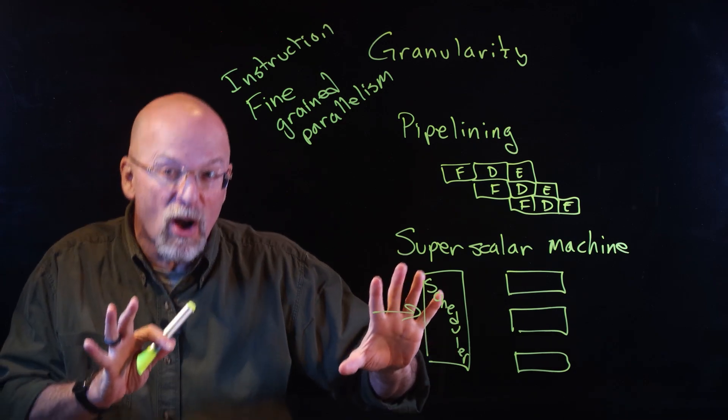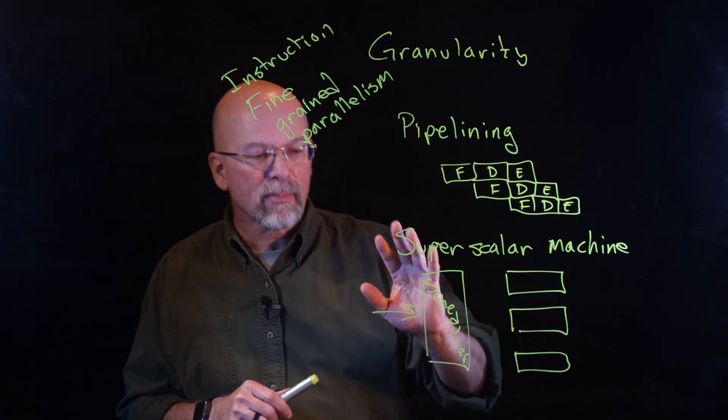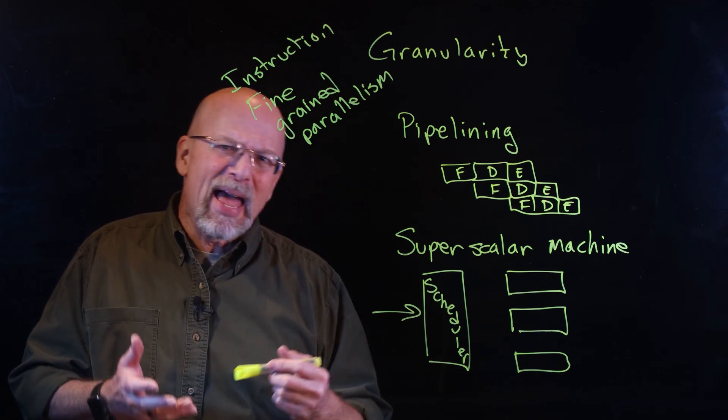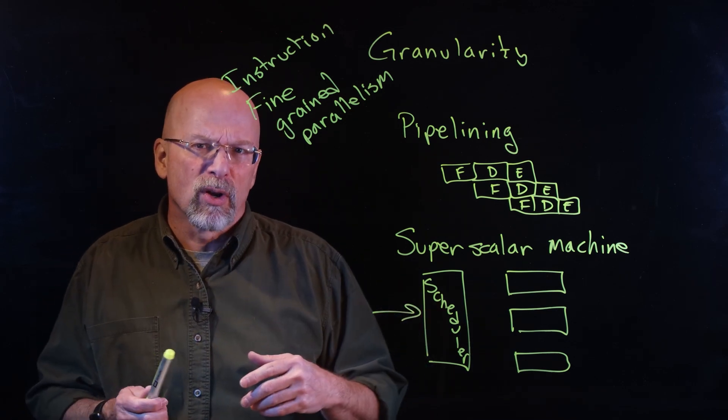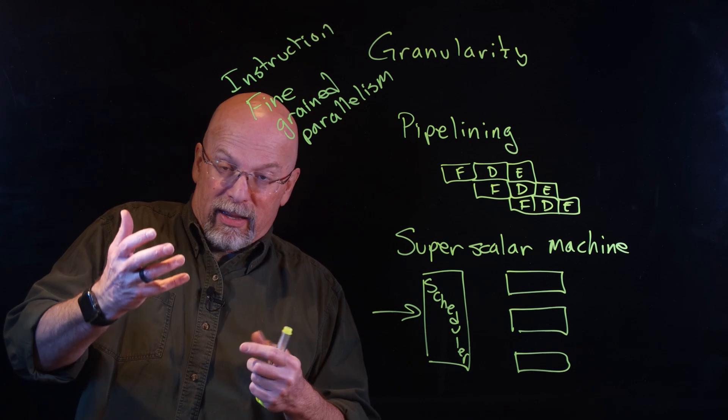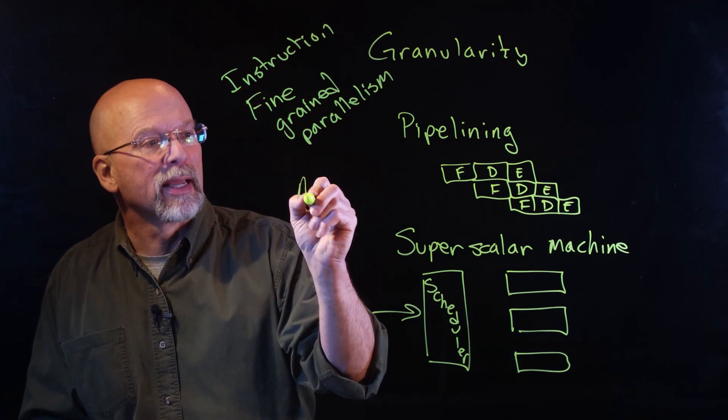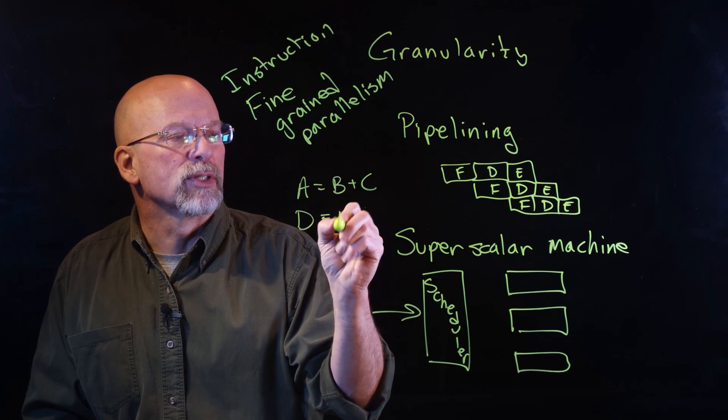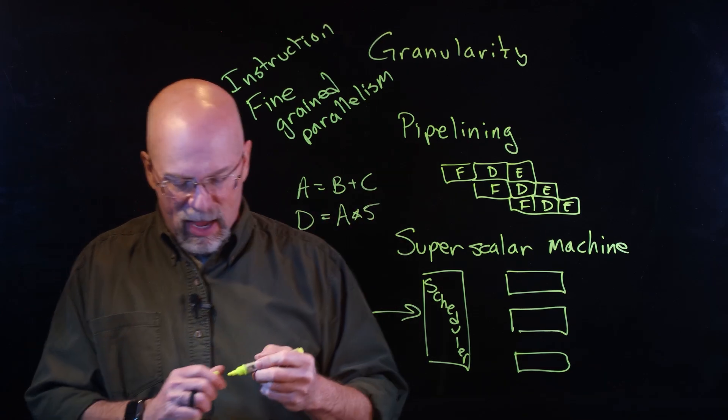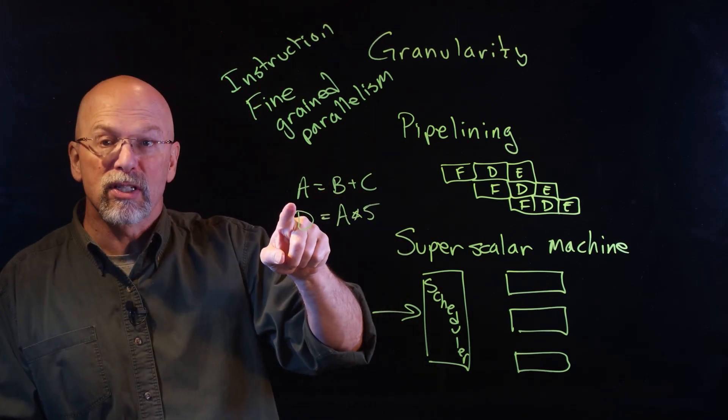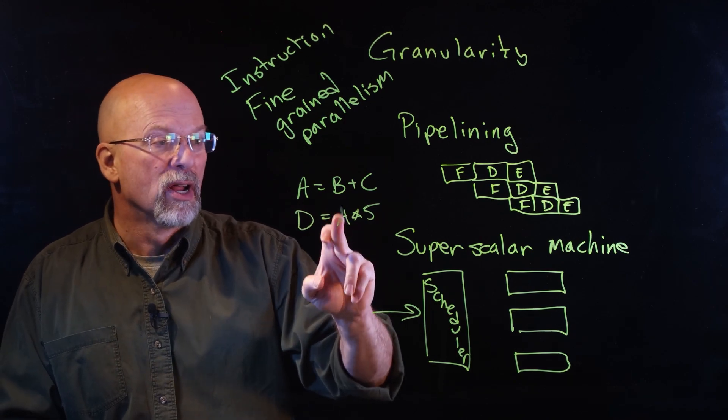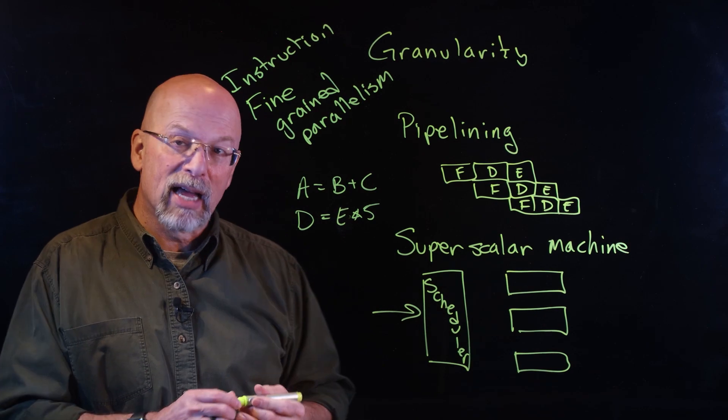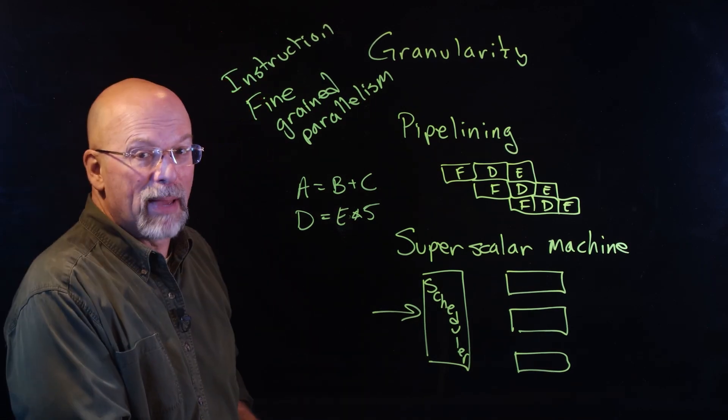It takes a look at the instructions. This is fully automated in the hardware. It takes a look at your instructions and says, is there a dependency of one instruction on another? Like, if I'm doing something like A is equal to B plus C, and then D is equal to A times 5, we've got a dependency. But what if this is D is equal to E times 5? These are two fully independent instructions.